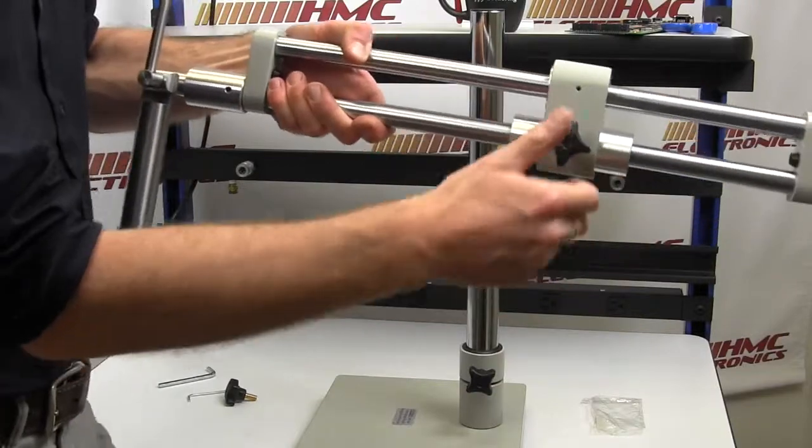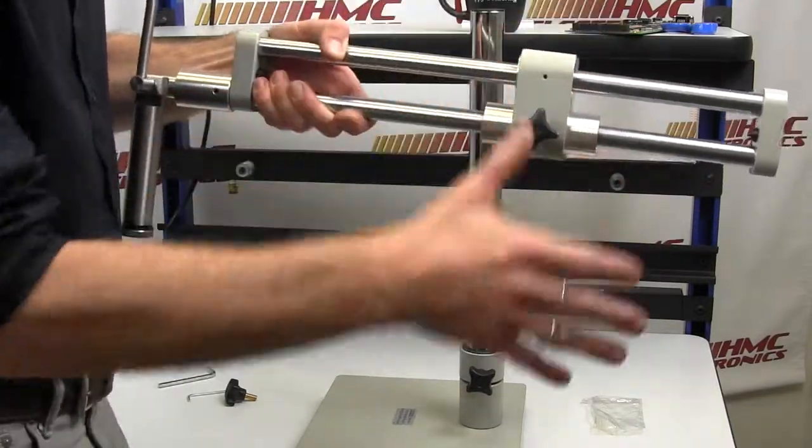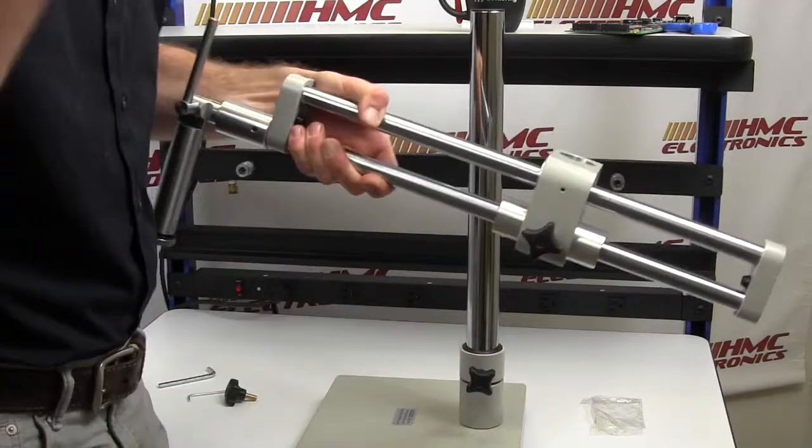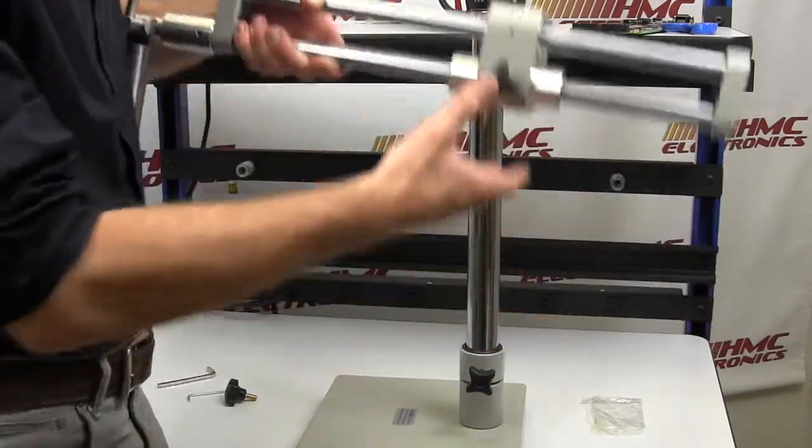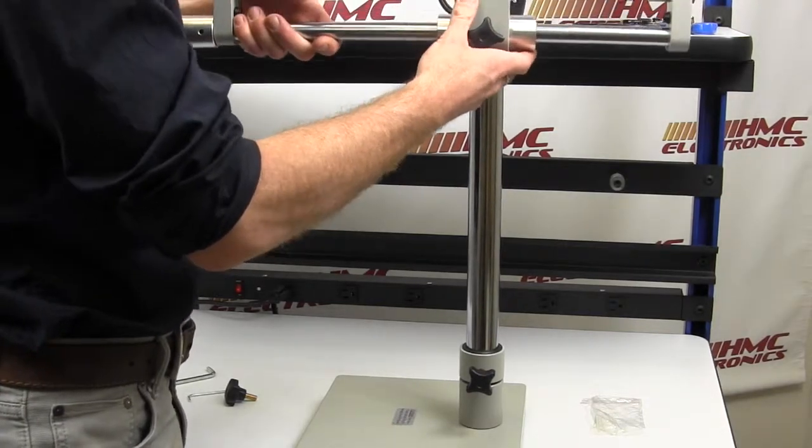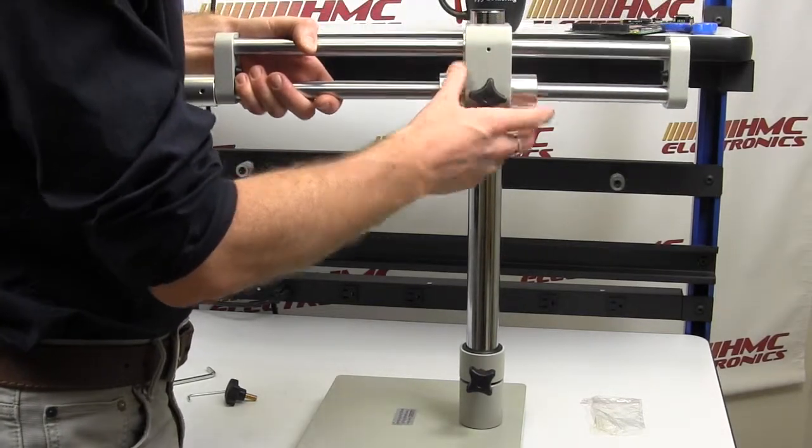So here is your dual arm. Everything is completely assembled already. There is nothing you need to put on it. If you look at the single arm boom stand, that cross block came assembled. It could be removed, but on cheaper microscopes it often is not assembled.